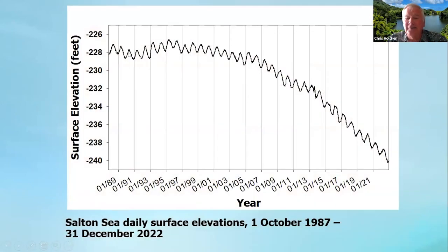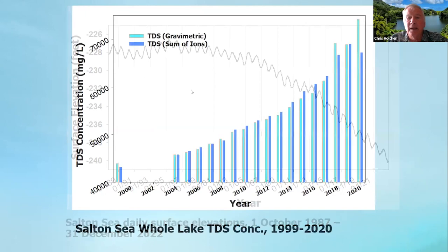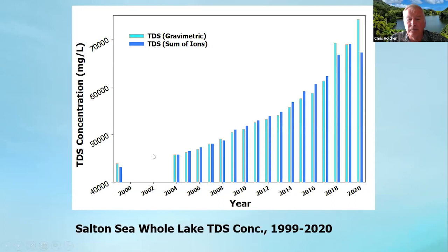This shows the sea level. USGS started reporting daily levels in October 1987. Roughly the first 8 to 15 years was fairly constant, but then in recent years it started to drop off fairly dramatically — we're now down to roughly minus 239 or 240 feet, having been minus 228 for many years. These are the total dissolved solids, measured both gravimetrically and by summing the major ions. At very high salt levels, water can be occluded within the salt matrix, causing the gravimetric method to give erroneously high results.